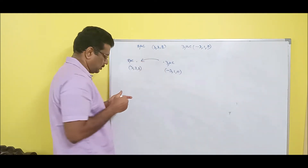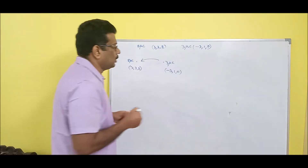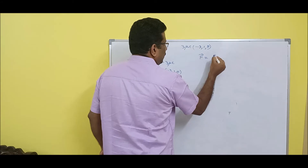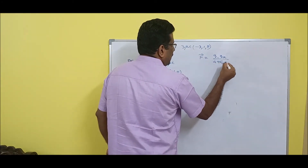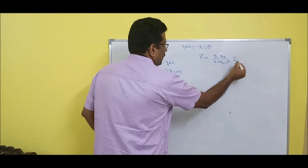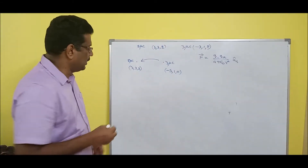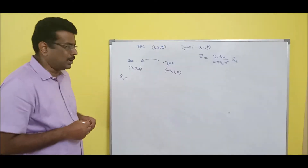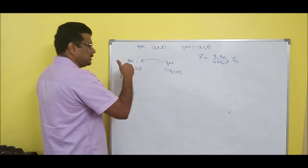So on 8 micro, you know the Coulomb's formula: F = Q1·Q2 divided by 4·pi·epsilon·r² times ar cap. Before starting any Coulomb's problem, first try to calculate what is ar cap — that is very important.